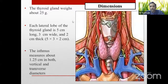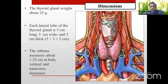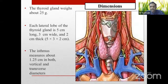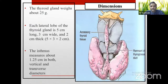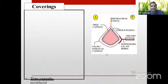The dimensions of the thyroid gland: it weighs roughly 20–25 grams. Each lateral lobe measures approximately 5 cm long, 3 cm wide, and 2 cm thick. The isthmus is about half an inch in both vertical and transverse diameters.